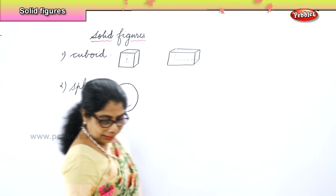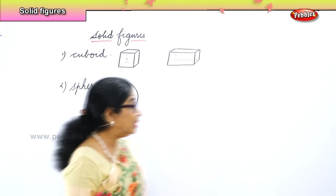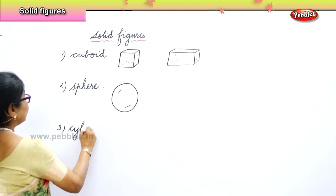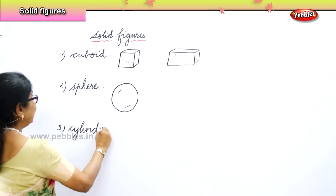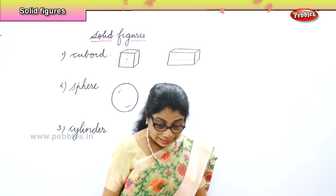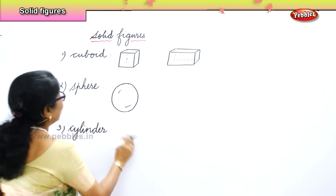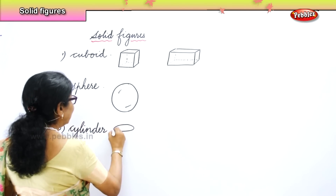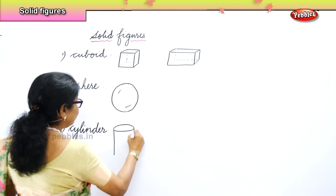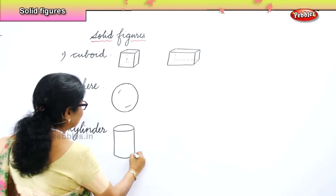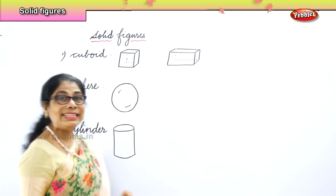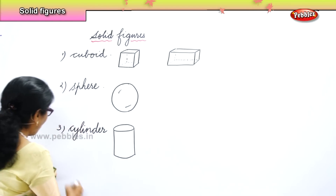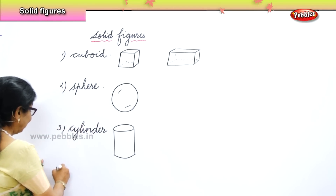Then next we have cylinder — the third solid is cylinder. Look at your gas cylinder in your house or anything similar. It has got a face, long sides, and this. Look at the tins you have at home — that is a cylinder.